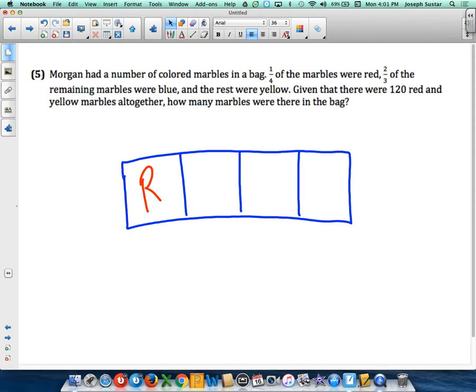Two-thirds of the remaining marbles were blue. There are three boxes remaining. Two-thirds would be two of those boxes, so two of those boxes are blue marbles.